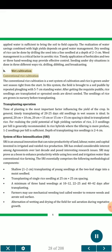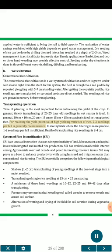Wet cultivation — Conventional rice cultivation: Conventional rice cultivation is a wet system where the field is brought to a puddled soil condition by repeated plowing with 5 to 7 cm standing water. After getting the requisite puddle, rice seedlings are transplanted or sprouted seeds are direct seeded. The seedlings of rice are grown in nursery before transplanting. Time of planting is the most important factor influencing yield. In general, timely transplanting of 20 to 25 days old seedlings in wet season is ideal. Spacing of 20 cm × 10 cm, 20 cm × 15 cm or 15 cm × 15 cm is ideal in transplanted rice. For high-yielding varieties, 2 to 3 seedlings per hill is generally recommended. In rice hybrids where tillering is more profuse, 1 to 2 seedlings per hill is sufficient. Depth of transplanting rice seedlings is 2-4 cm.